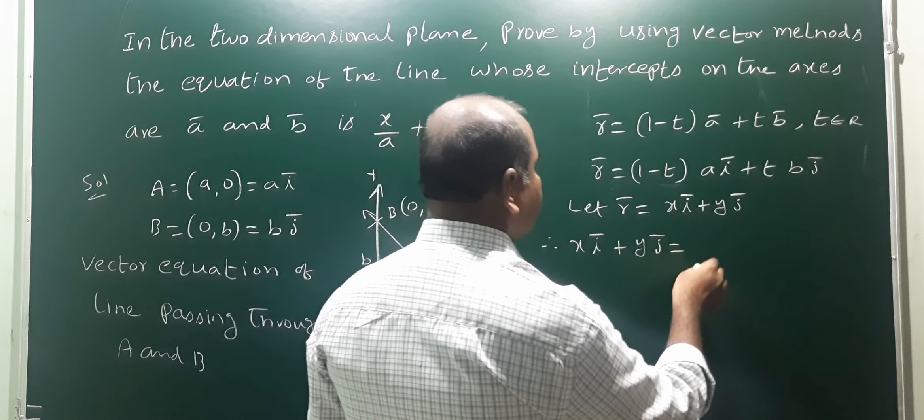Comparing ī coefficients: left side gives x, right side gives (1−t)·a. So x = (1−t)·a, which means x/a = (1−t). Comparing j̄ coefficients: left side gives y, right side gives t·b. So y = tb, which means y/b = t.